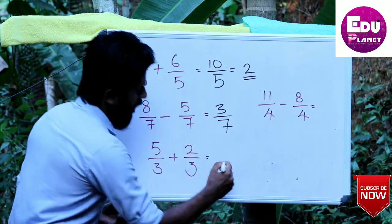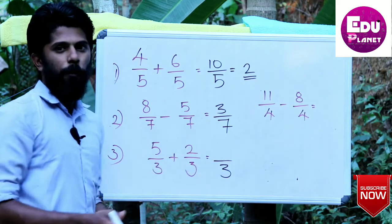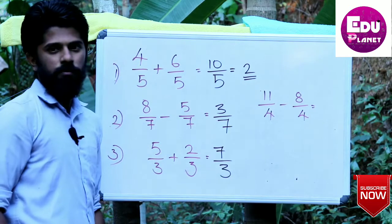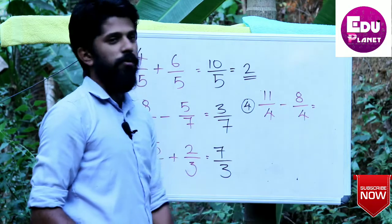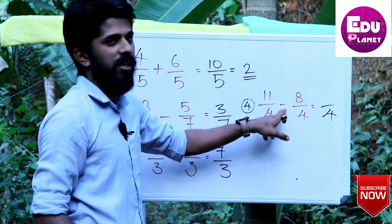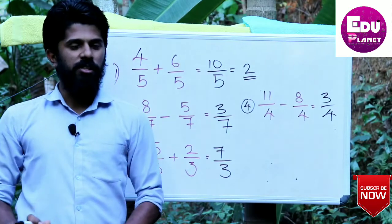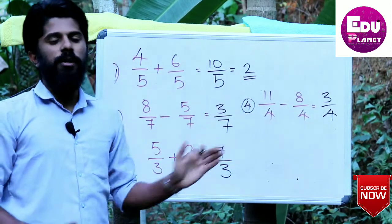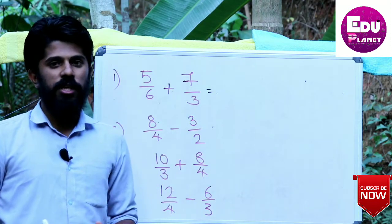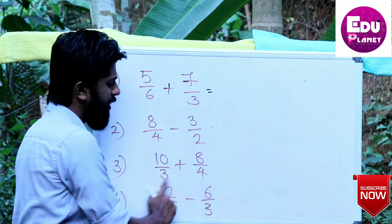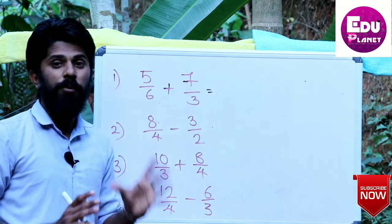Addition operation: denominator is the same, so 5 plus 2 equals 7 by 3. Next, 11 by 4 minus 8 by 4 — the denominator is the same, so we proceed directly with the subtraction.